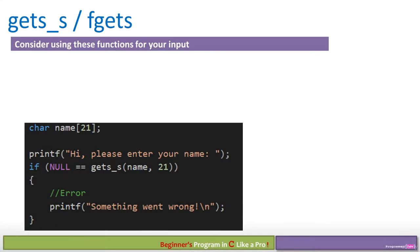If scanf has so many issues, what else can we use? Other C runtime functions include gets_s (the secure version) and fgets. Consider using these for your input. Here's an example using gets_s: many people say never to use the non-secure gets because it never accepted a buffer size, which could easily cause buffer overruns. However, gets_s is the secure version — it will not allow more than the maximum size to be input into the buffer, so it won't cause memory problems.